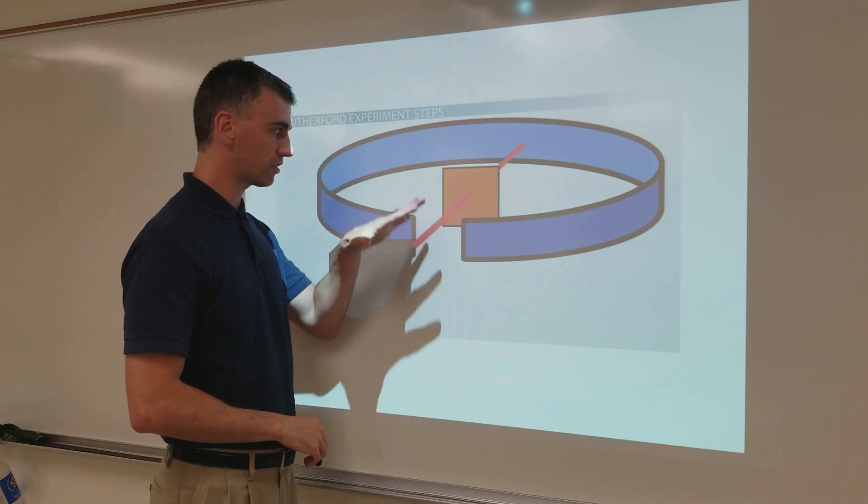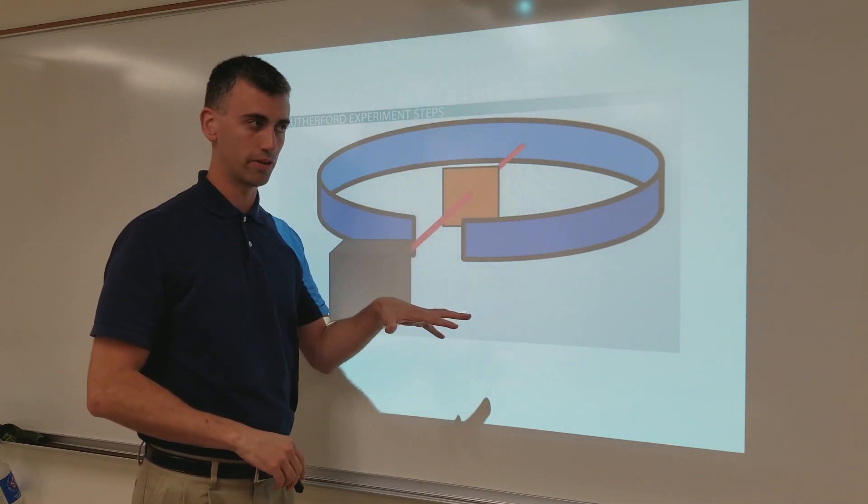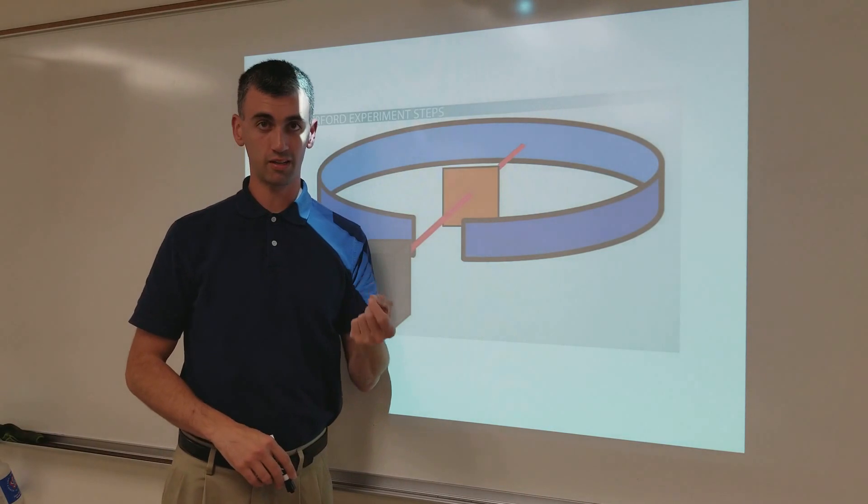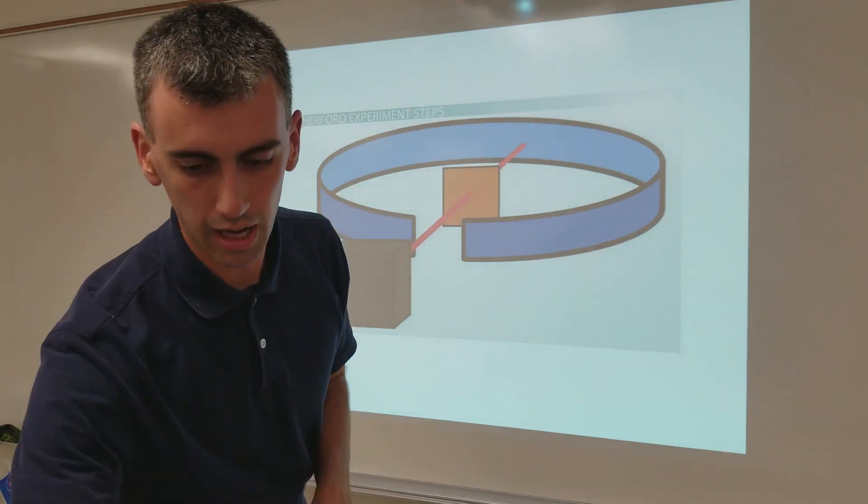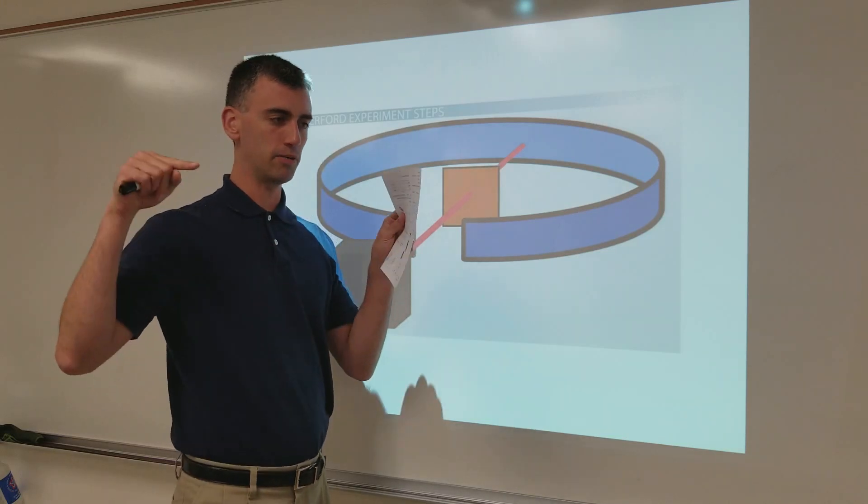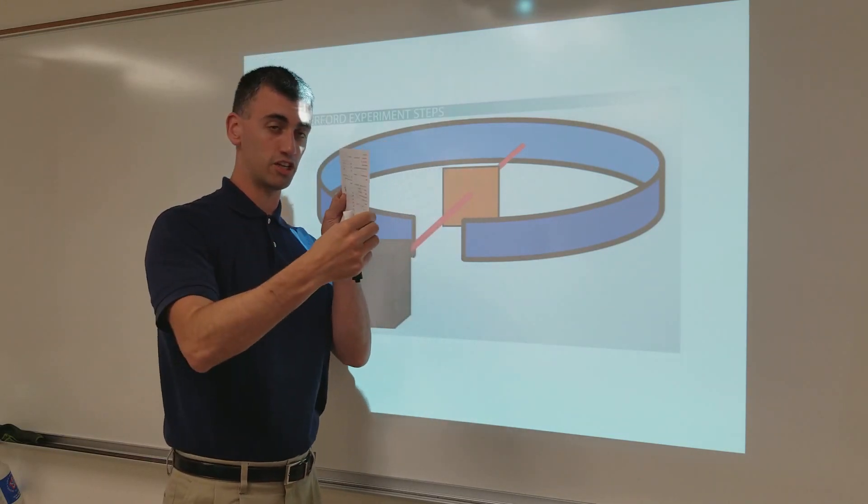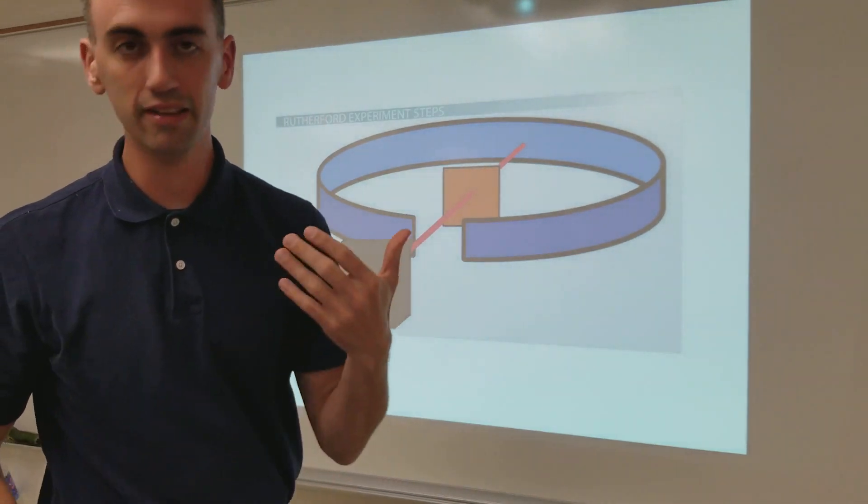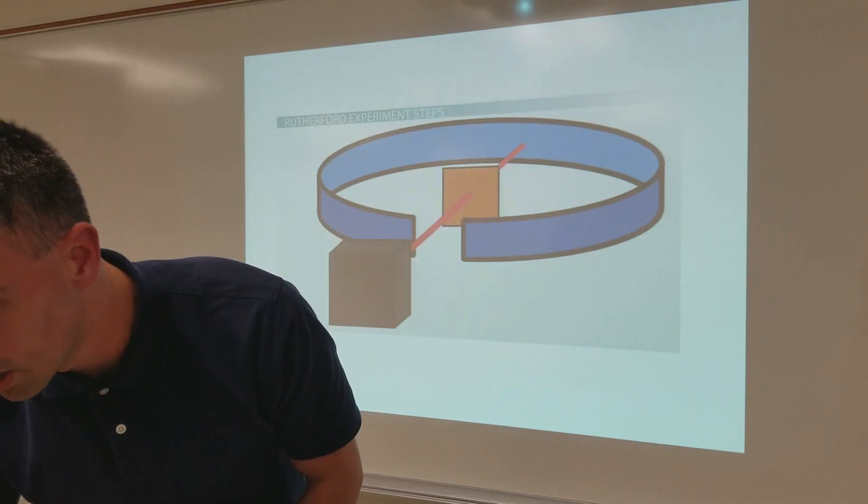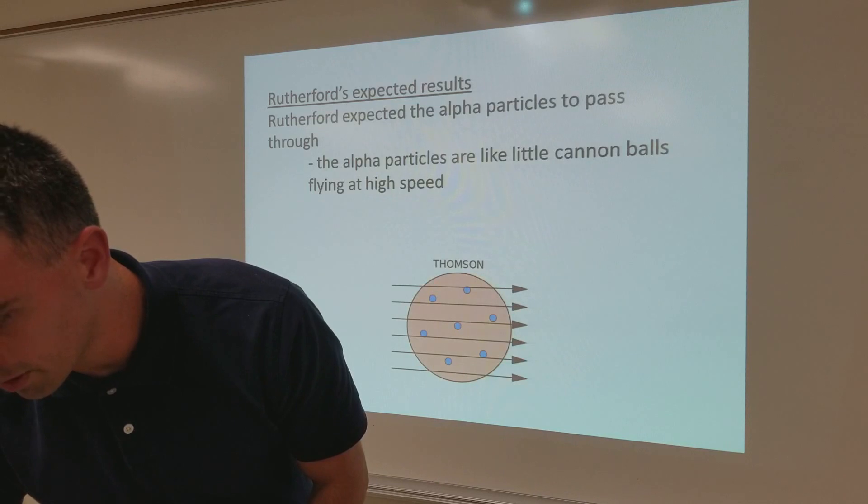Now, why did he think that? Well, first of all, it's really thin gold foil. These alpha particles are like little miniature cannonballs. So, think like high speed objects passing through a sheet of paper. He was expecting, you know, imagine firing a bullet at a sheet of paper. He was expecting it to just go straight through.